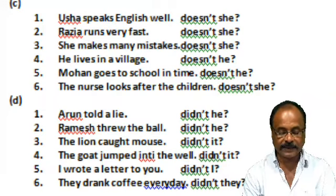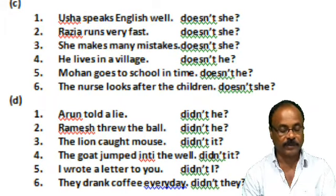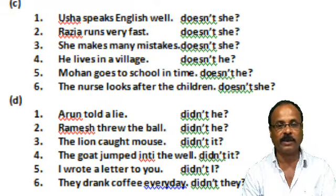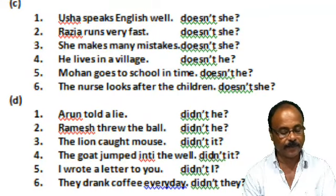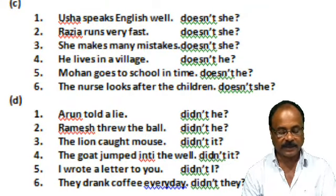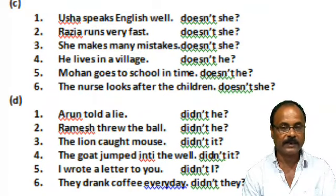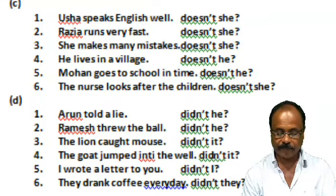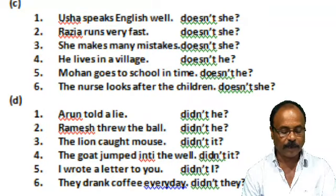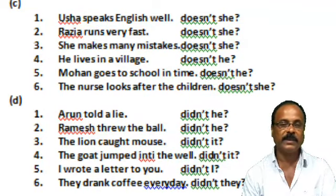Group C. 'Usa speaks English well.' You see, the verb here is third person singular number, so we have to take the help of 'does.' — 'Doesn't she?' 'Rajya runs very fast.' — 'Doesn't she?' 'She makes many mistakes.' — 'Doesn't she?' 'He lives in a village.' — 'Doesn't he?' 'Mohan goes to school in time.' — 'Doesn't he?' 'The nurse looks after the children.' — 'Doesn't she?'